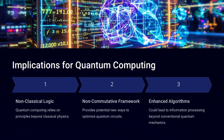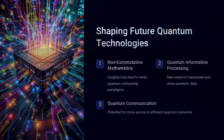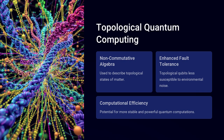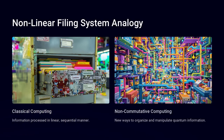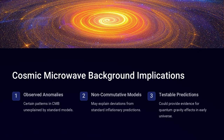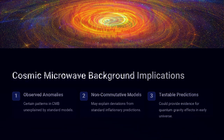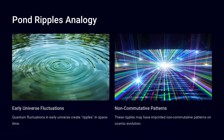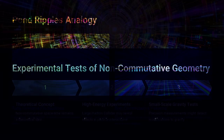One of the biggest implications of non-commutative geometry is its role in black hole physics and the early universe. If space itself is quantized, could it prevent singularities — places where physics seems to break down, like the center of black holes or the Big Bang? Some theories propose that non-commutative geometry could resolve infinities in quantum field theory, providing a framework for a deeper understanding of gravity at the quantum level.